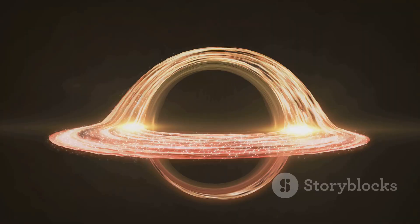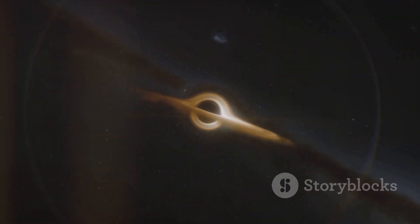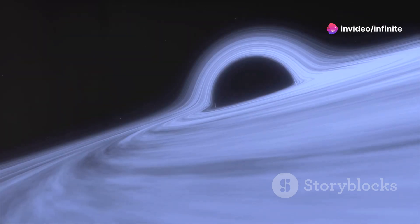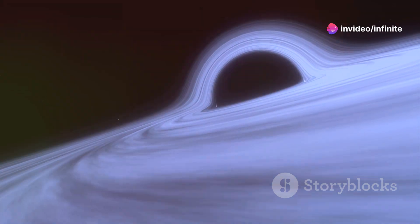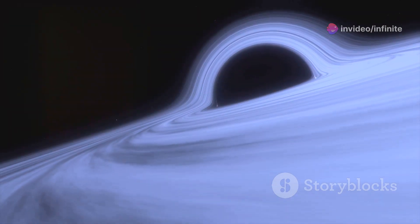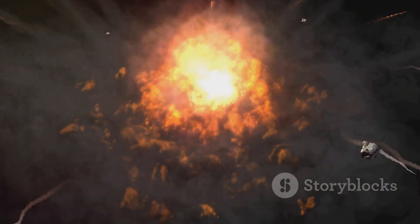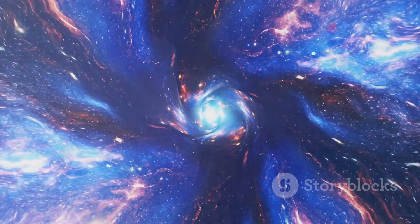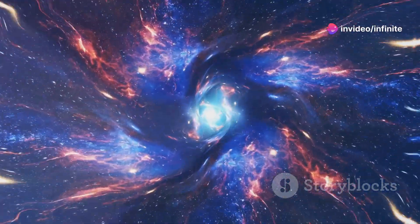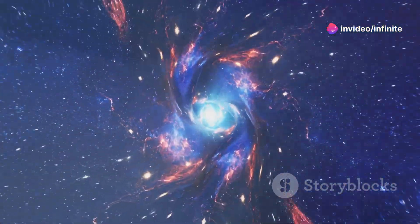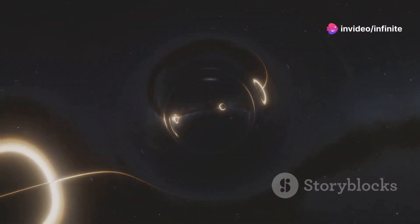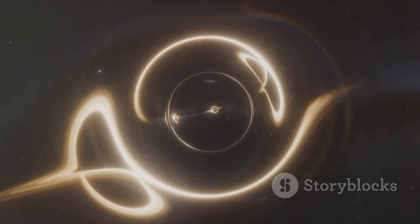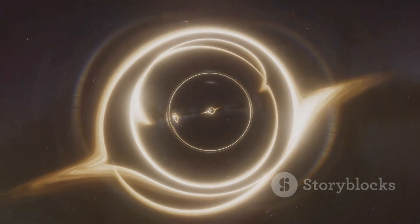White holes and black holes represent two sides of the same cosmic coin. Black holes are regions of intense inward pull, while white holes are theorized to be regions of outward expulsion. While black holes gobble up matter and energy, white holes are thought to spit them out. Some scientists believe that white holes could be the other end of black holes, connected by a tunnel through space-time. In this scenario, matter and energy falling into a black hole might emerge from a white hole somewhere else in the universe, or even in another universe altogether.